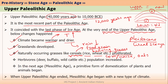When grasslands developed, herbivores — grass-eating animals like deer, buffalo, and wild cattle — also increased in population. Humans learned that some animals, such as certain buffaloes and wild cattle, were not very aggressive. At the end of the Upper Paleolithic Age, people began to realize that such animals could be domesticated, though actual domestication happened gradually over a long period of time.